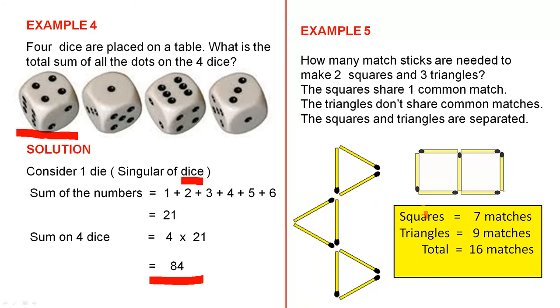So for the squares, for this first one here, you've got four. One, two, three, four. And for the second one, that's an extra three, because you've got one, two, three. So that gives you seven. There are your seven matches. The triangles are easy: three, six, nine. Seven plus nine is 16. So that's the answer. The total matchsticks needed are 16.